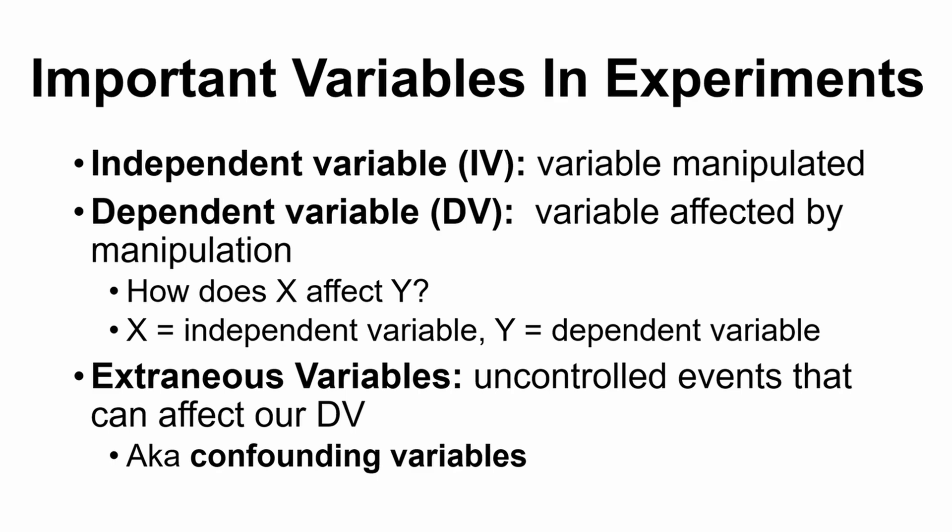Our dependent variable, or DV, is the variable that's affected by the manipulation. So our measurement of the dependent variable will change depending on our manipulations. If we were looking at an antidepressant, we would look at a measure of mood, and we would hope that some people who received a certain dosage of that medication should show an increase in their mood. So our manipulation to the independent variable causes a change in the measure we get of our dependent variable. We're asking: how does our independent variable change or affect our dependent variable?